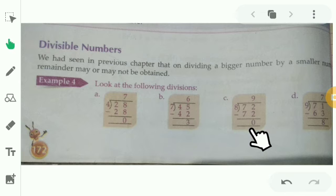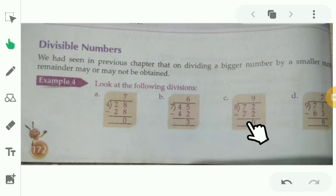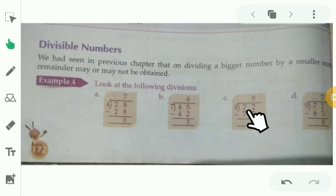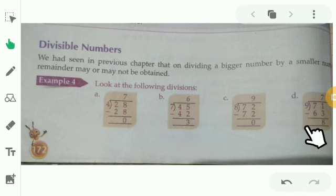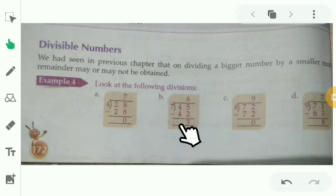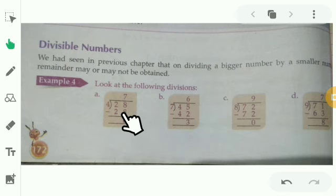Next, 72 divided by 8 — here 8 divides 72 exactly: 8 nines are 72, remainder is 0. So 8 is a factor of 72. A factor means a number which divides the given number exactly without leaving any remainder. For 71 divided by 9, the remainder is 8, so 9 is not a factor of 71.